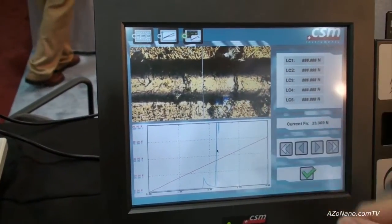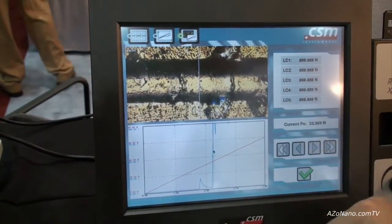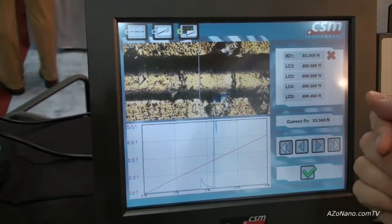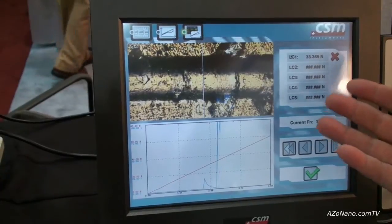So this is basically the data and then once we've selected our zone we click on LC1, that's critical load 1, and we can say this coating fails at 33.36 newtons for example.